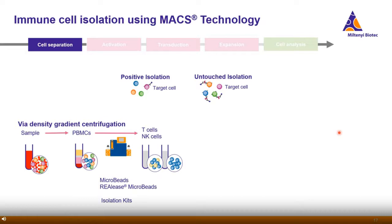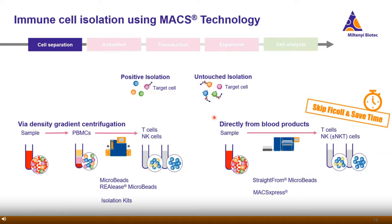We basically have two options. The first option is to isolate T cells or NK cells from PBMCs. For T cells, we recommend using a one-to-one mixture of CD4 and CD8 microbeads for positive isolation, or our T cell isolation kit for untouched isolation. The microbeads and kits are available for many different T cell subtypes, for example to isolate pan T cells, naive T cells, T-regs, and so on. For NK cells, we recommend a two-step separation: T cell depletion with CD3 microbeads followed by NK cell enrichment with CD56 microbeads. In case NK cells should be isolated in an untouched manner, the NK cell isolation kit is recommended.